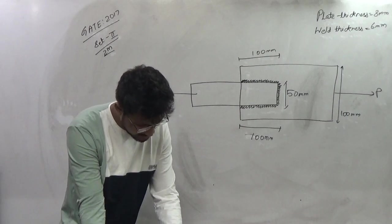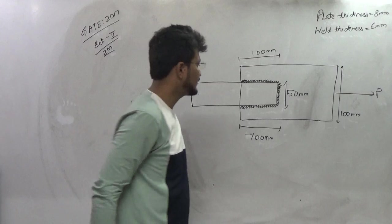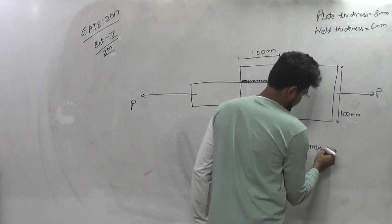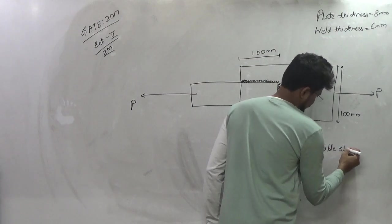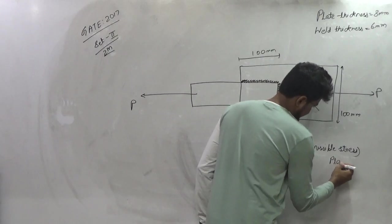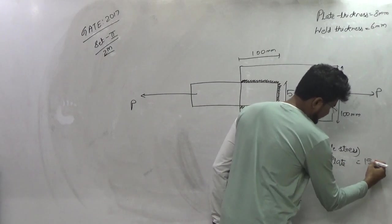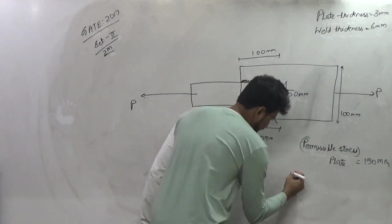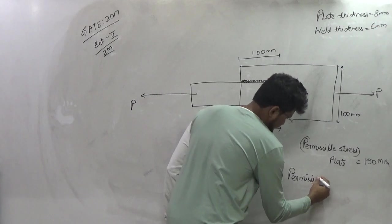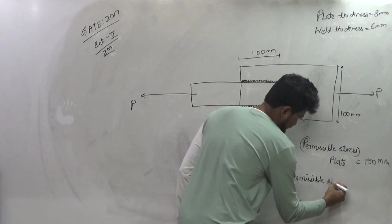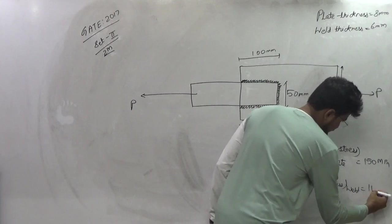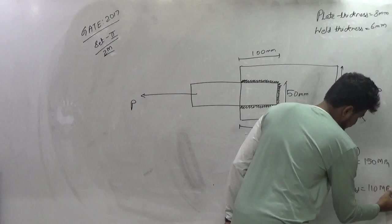Permissible stresses in the plate and weld are 150 MPa and 110 MPa respectively. Permissible stress for weld is 110 MPa.